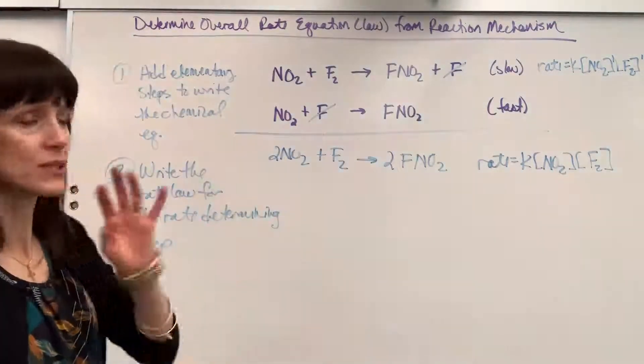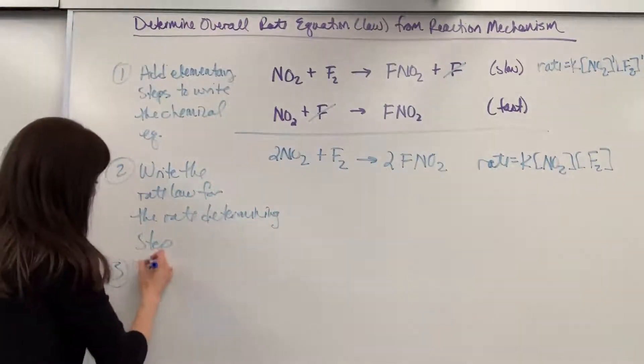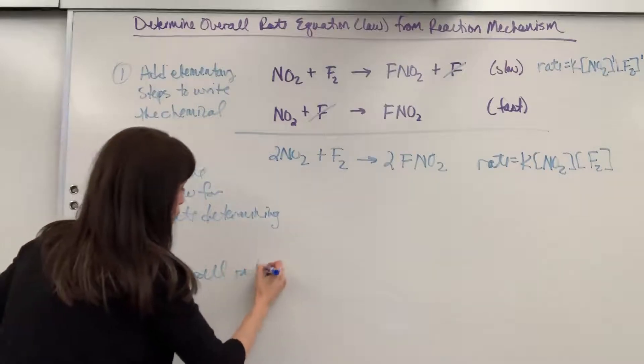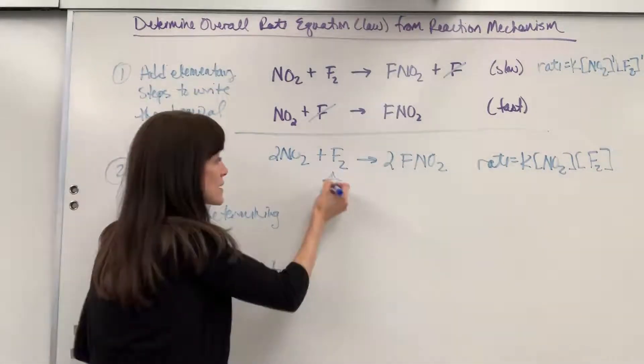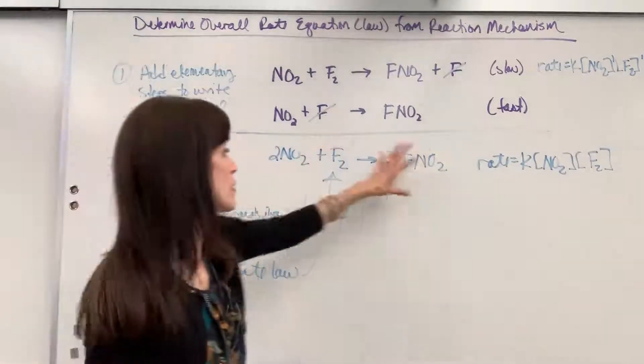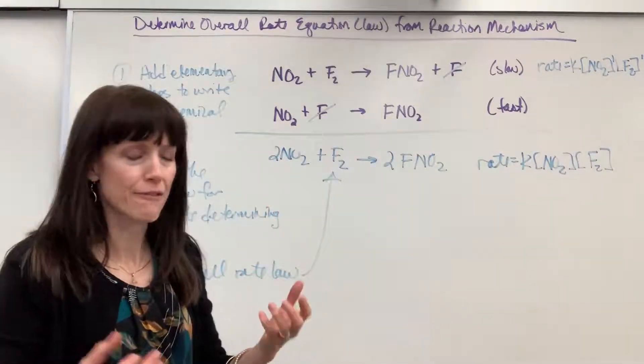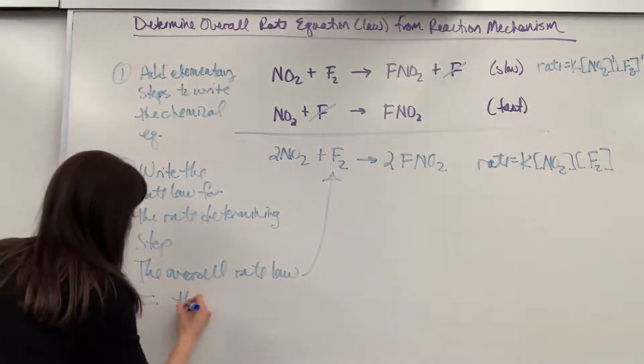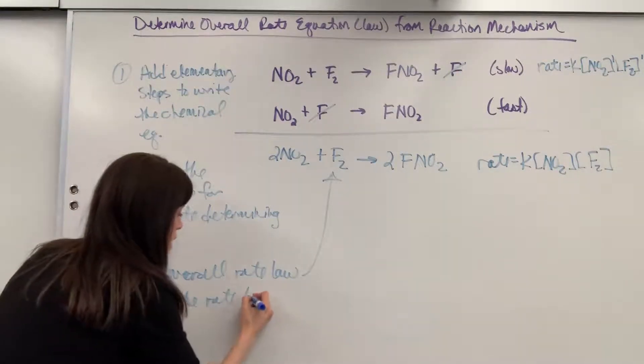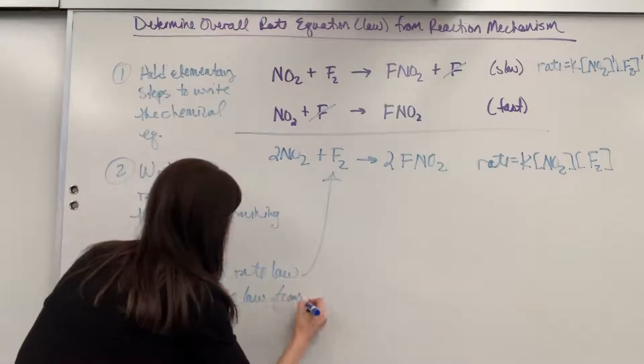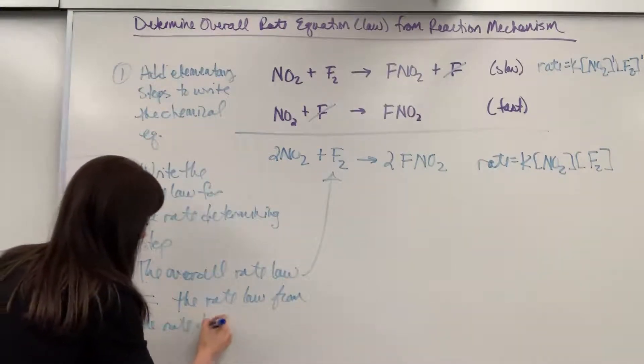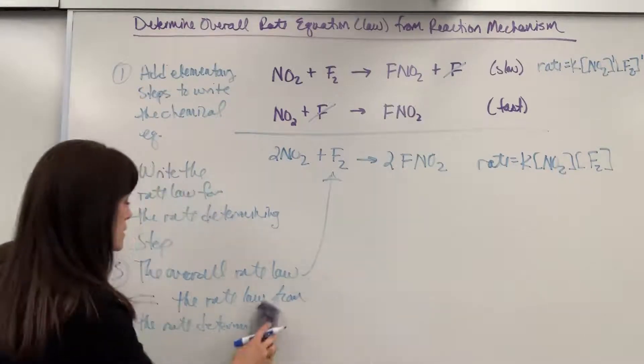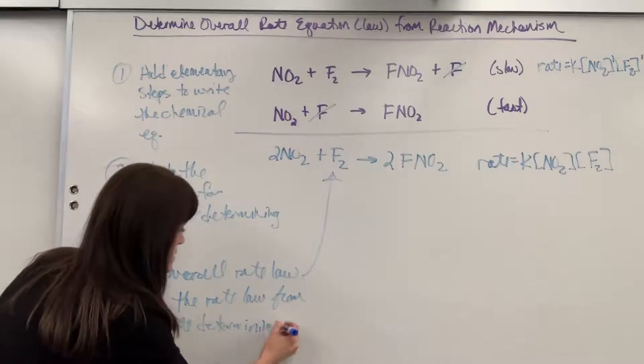So let's write down step three: the overall rate law. Okay, so this is for the real chemical equation. This is the equation that we observe in real life. The overall rate law equals the rate law from the rate determining step.